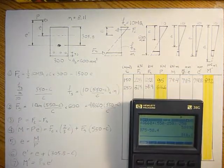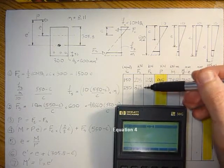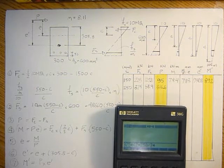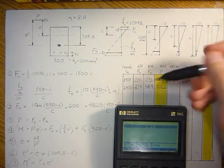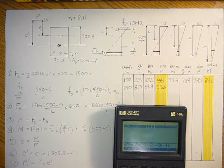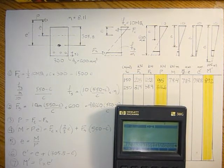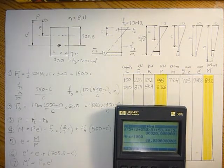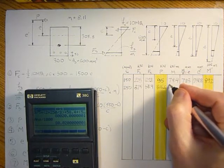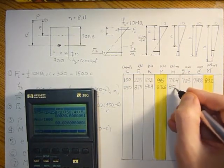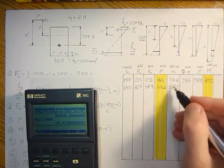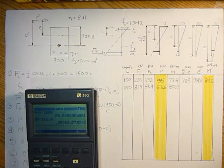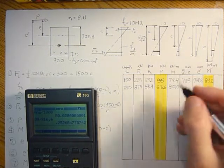And then the moment would be force in the concrete, 375 times 2 times 250 divided by 3, plus the force in the steel, 58.4 times 550 minus 250, and divide that by 1000 to put it in kilonewtons meters. That's about 80 kilonewtons meters. And then M divided by P is the eccentricity: 80 divided by 316.6 gives me 0.252 meters, so that's 252 millimeters.